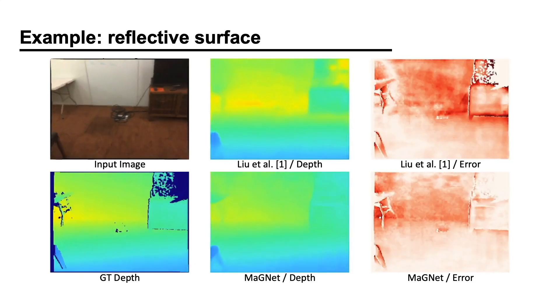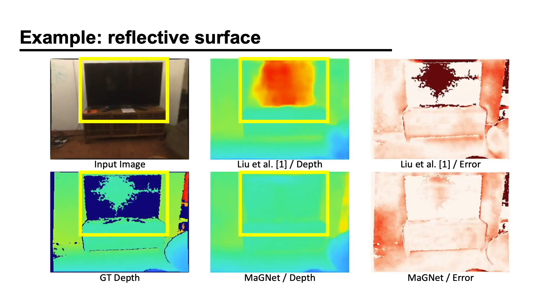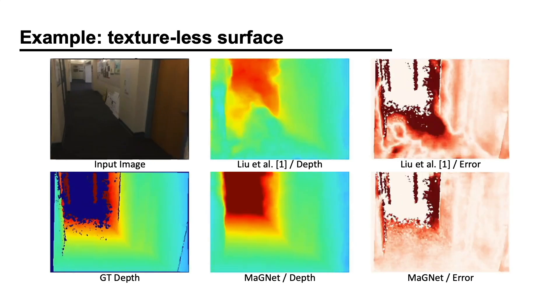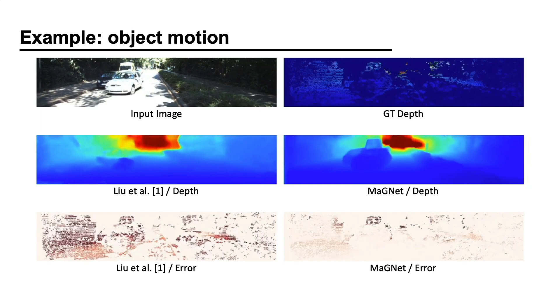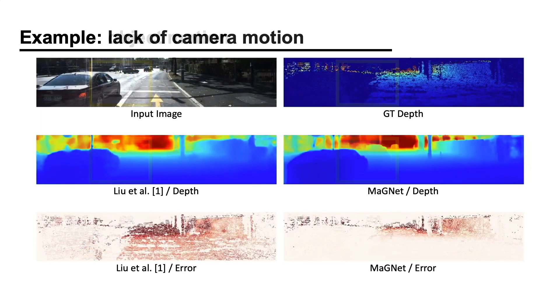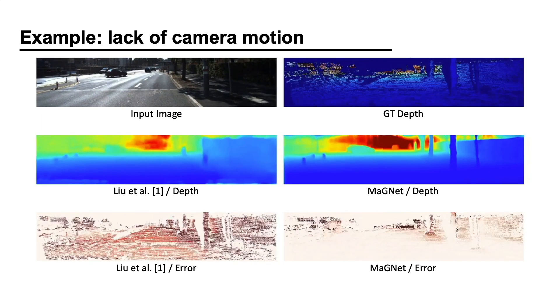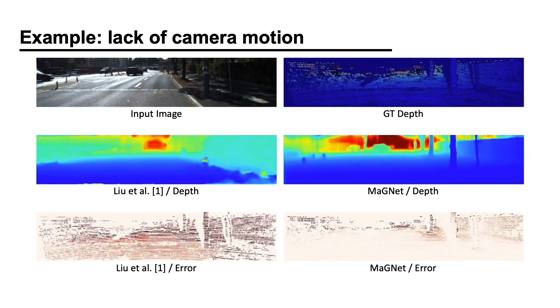To summarize, MaGNet enforces the multi-view prediction to be consistent with the single-view depth probability distribution. This makes MaGNet robust against challenging artifacts such as reflective surfaces, textureless surfaces, moving objects, and lastly, the lack of camera motion, which makes it difficult to use the geometric cues.